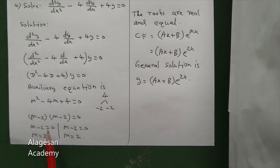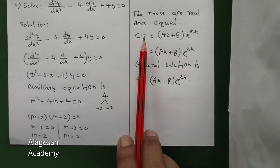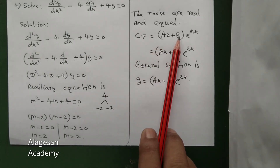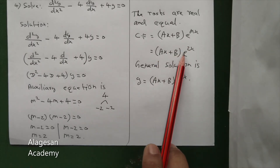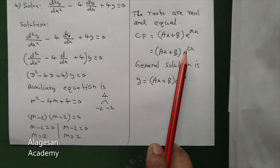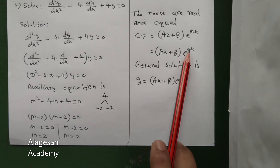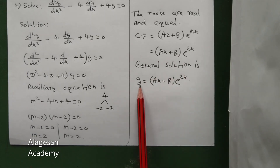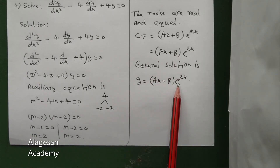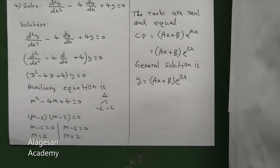m minus 2 equal to 0, so m equal to 2. Here also m minus 2 equal to 0, so m equal to 2. The two roots are real and equal. So CF equal to ax plus b, e power mx. Here m equals 2, so e power 2x. The general solution is y equal to ax plus b into e power 2x. That is all. Can you understand this problem?